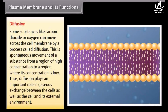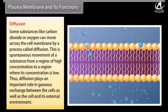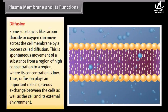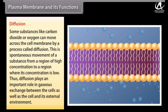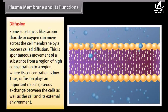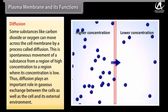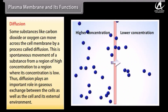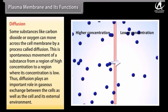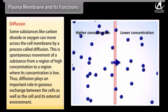The plasma membrane allows or permits the entry or exit of some materials in and out of the cell, while preventing movement of some other materials — therefore it is called a selectively permeable membrane. Diffusion: Some substances like carbon dioxide or oxygen can move across the cell membrane by a process called diffusion. This is the spontaneous movement of a substance from a region of high concentration to a region where its concentration is low, playing an important role in gaseous exchange between cells and their environment.